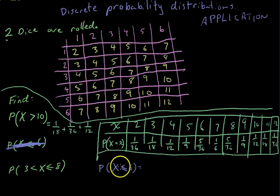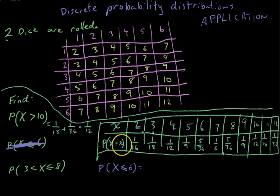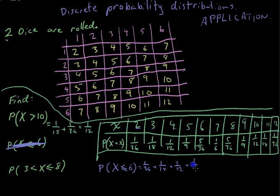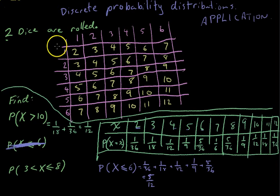This is the second question: the probability that x is less than or equal to 6. That means it could be a 2, a 3, a 4, a 5, or a 6. To find the probability of any of those things happening, you just add them together. So it'll be 1 in 36 plus 1 in 18 plus 1 in 12 plus 1 in 9 plus 5 in 36. Add them all together and you get 5 in 12. So the probability, if you roll 2 dice, that you get a number of 6 or less is 5 in 12.